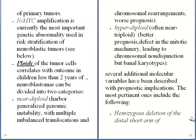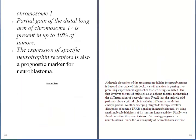Other than age, stage, ploidy, MYCN amplification, and histological evidence — which are the primary factors informing prognosis — there are several additional molecular variables described. The most important include: hemizygous deletion of the distal short arm of chromosome 1; partial gain of the distal long arm of chromosome 17, present in about 15% of tumors; and expression of specific neurotrophin receptors, which are also prognostic markers for neuroblastoma.